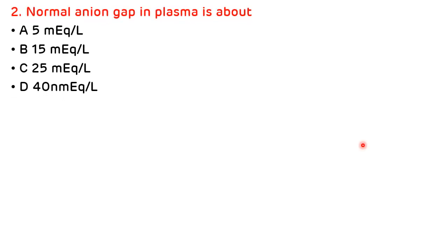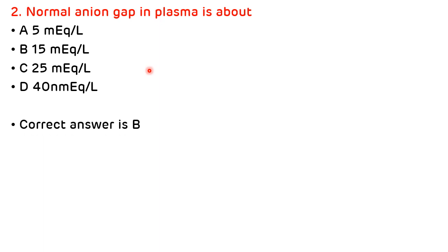Question 2: Normal anion gap in the plasma is about — A) 5 mEq/L, B) 15 mEq/L, C) 25 mEq/L, D) 40 mEq/L. The normal range of anion gap is 8 to 16 mEq/L, so the correct answer is B — 15 mEq/L.